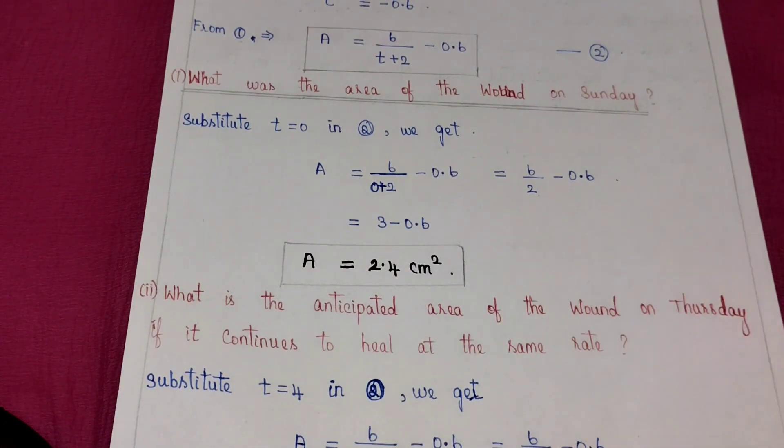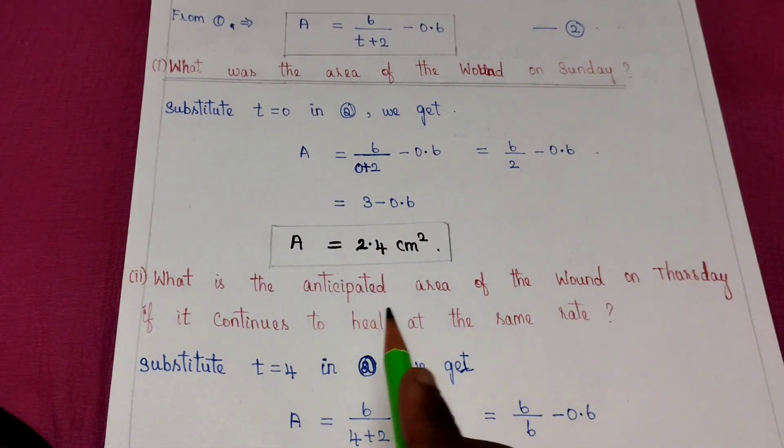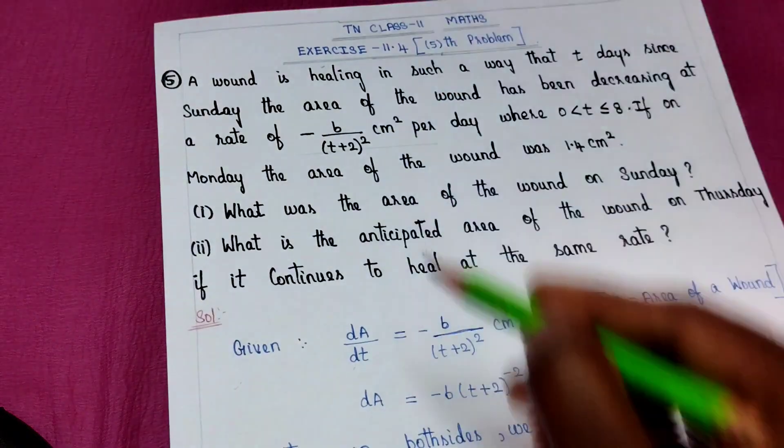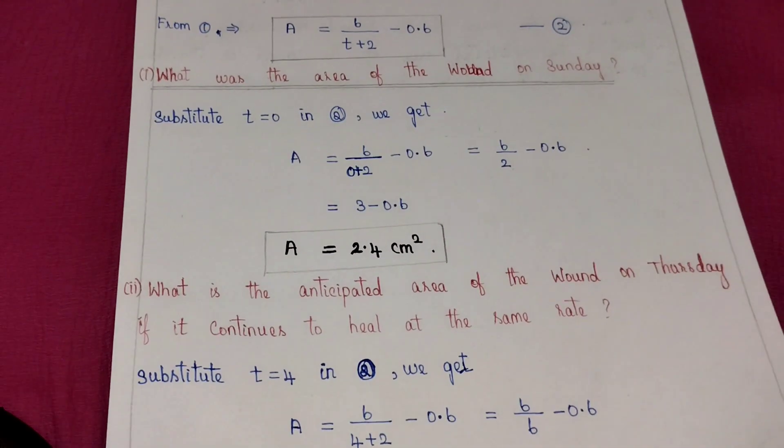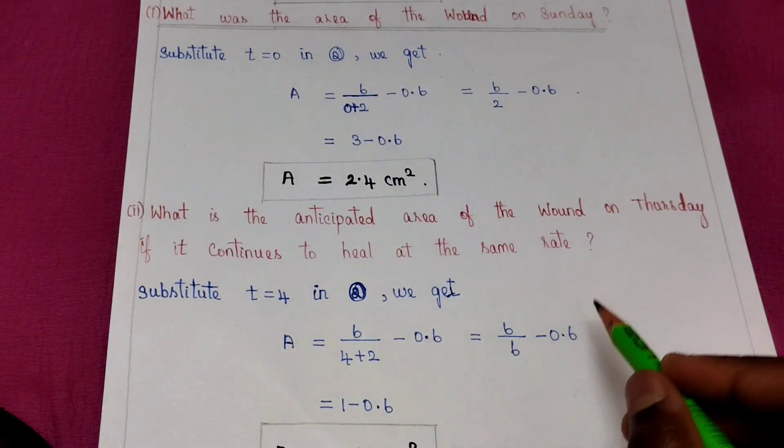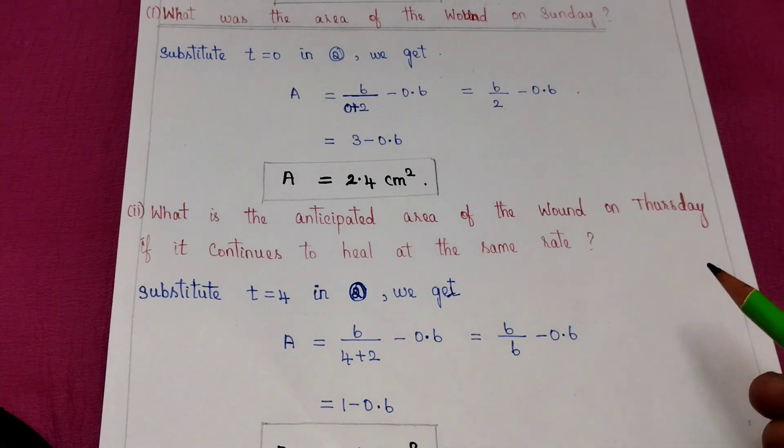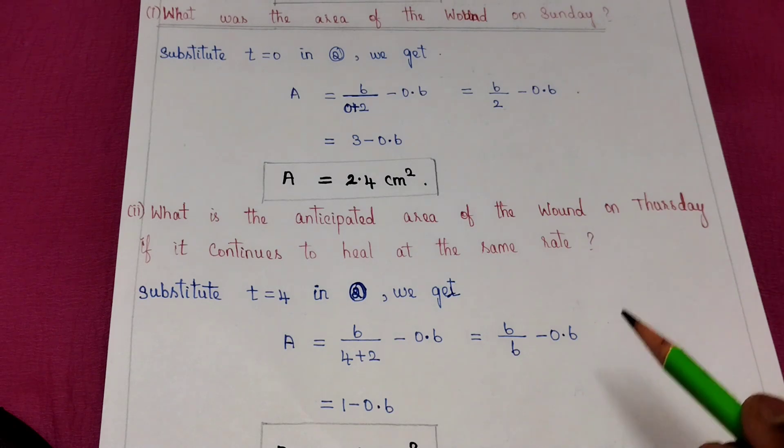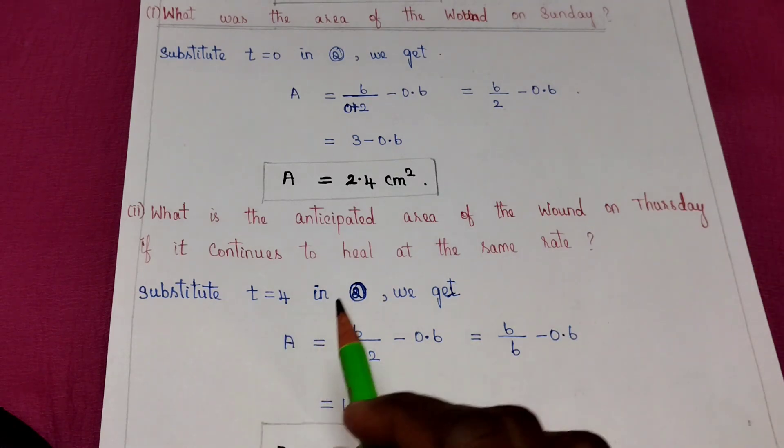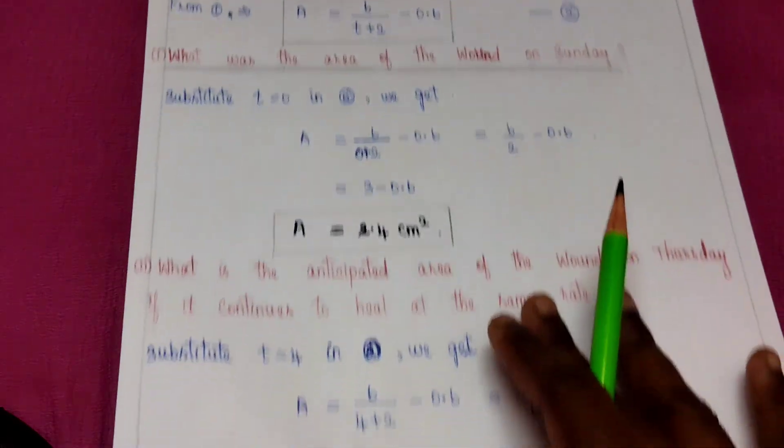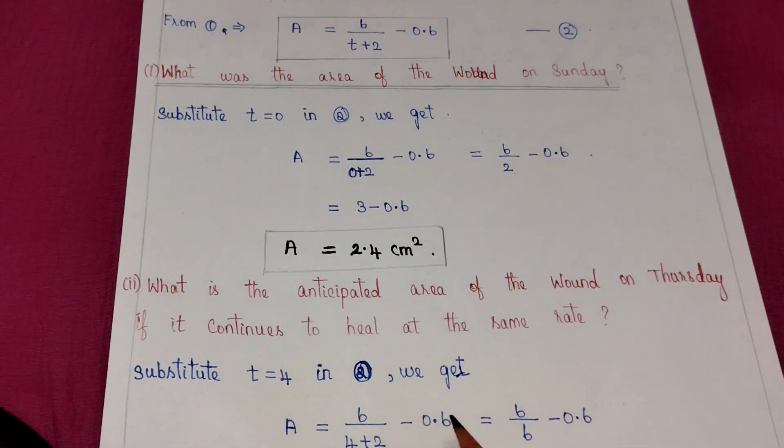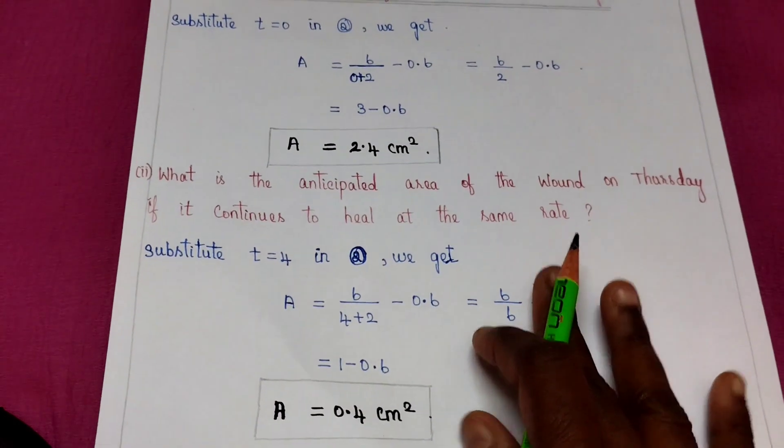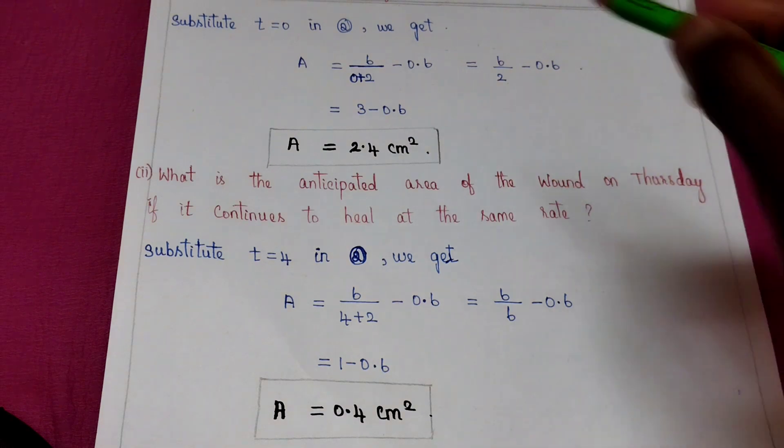Next, what is the anticipated area of the wound on Thursday if it continues to heal at the same rate? Sunday t equals 0, Monday t equals 1, Tuesday t equals 2, Wednesday t equals 3, Thursday t equals 4. So A equals 6 divided by 4 plus 2 minus 0.6, which equals 6 divided by 6 minus 0.6 equals 1 minus 0.6 equals 0.4 centimeter square.